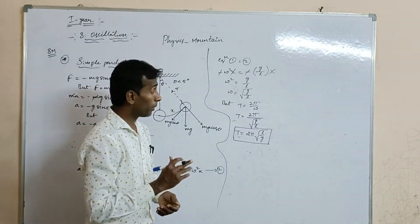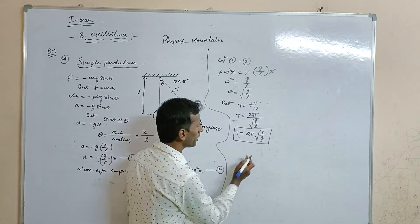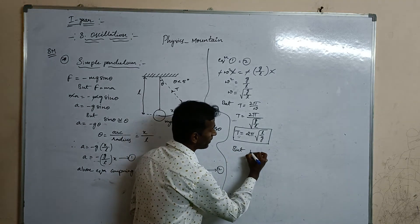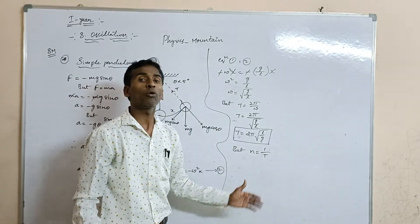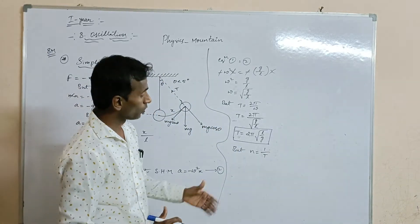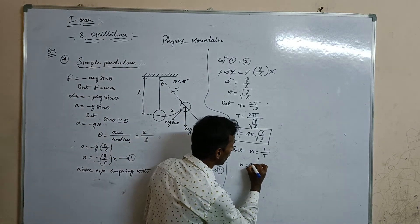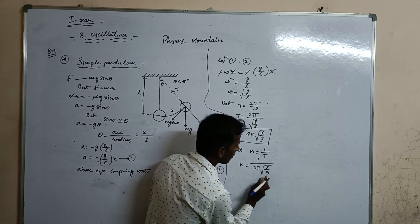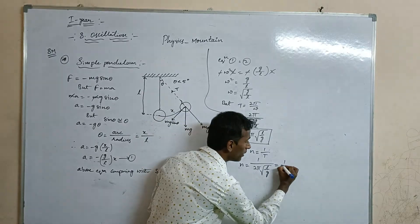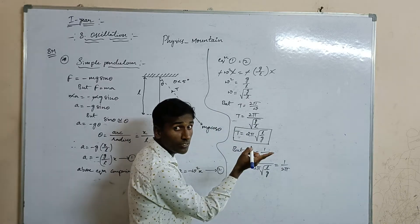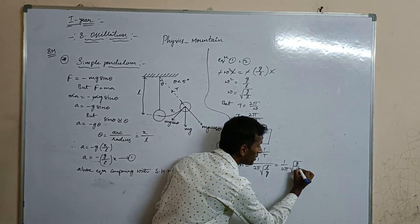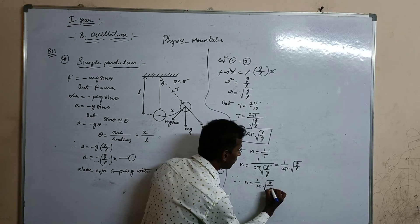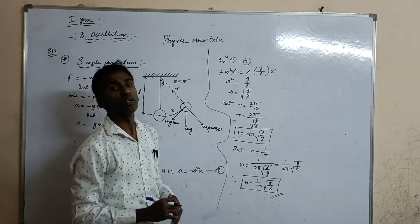If you want the frequency, frequency N equals 1/T — the reciprocal of the time period. So N = 1 / (2π × √(L/g)), which can be rewritten as N = (1/2π) × √(g/L). This is the frequency formula.